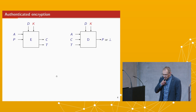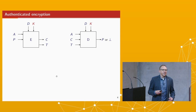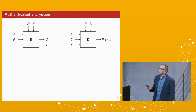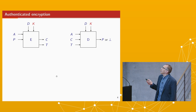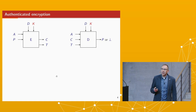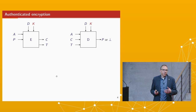First, it's important to explain what authenticated encryption is, because that's the holy grail of modern symmetric crypto. We have a block diagram: Alice and Bob want to communicate such that an eavesdropper cannot see the content of messages, and when a message arrives at Bob, it has not been modified on the way. If Bob receives a message supposedly from Alice, it was indeed sent by Alice and not modified in between.